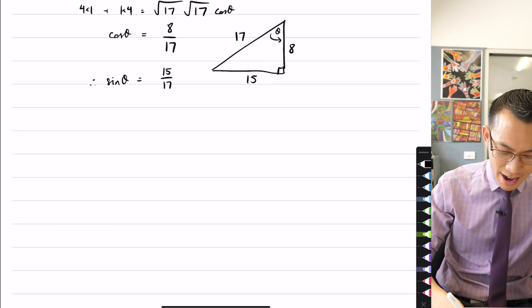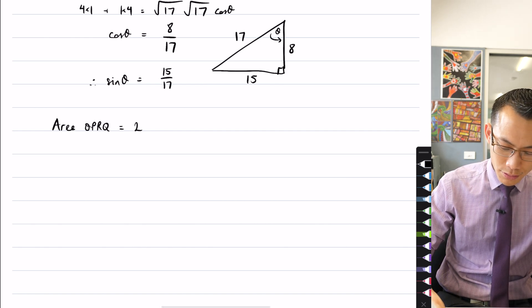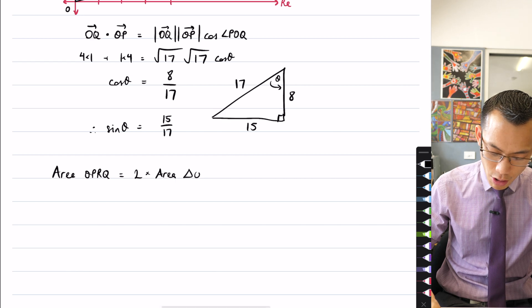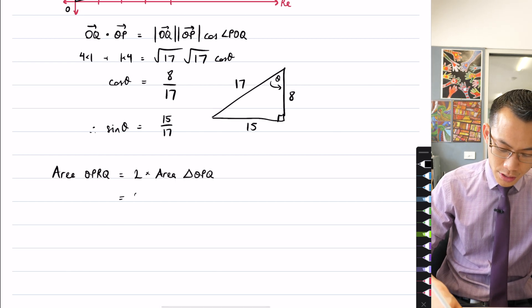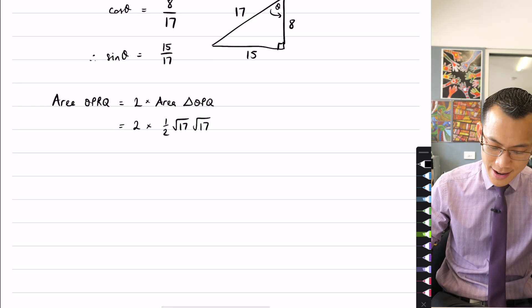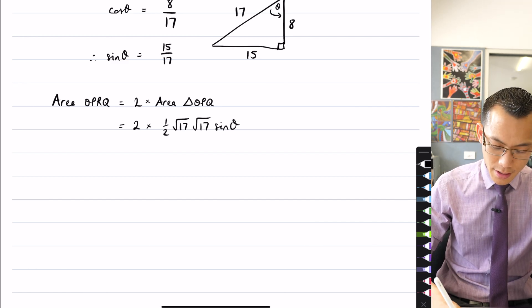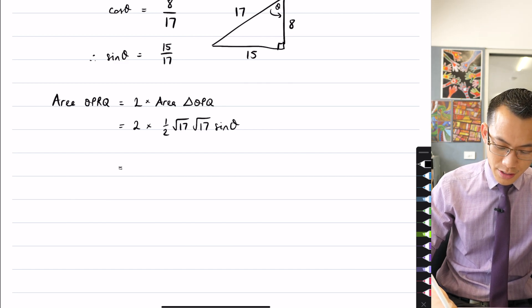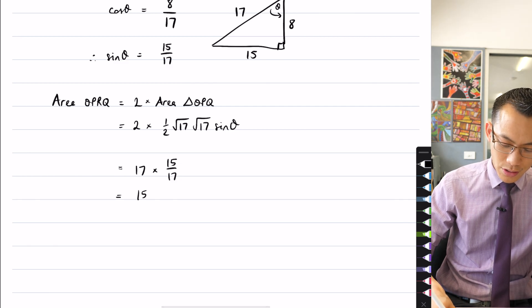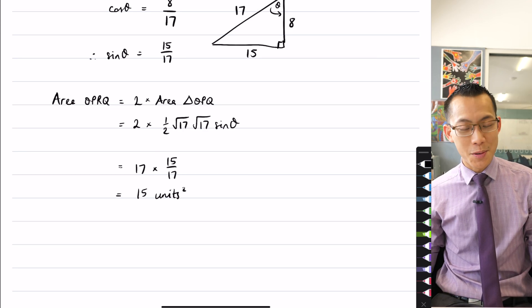I'm going to say that area OPRQ, it's double the area of this blue triangle that I've just worked out here, which is OPQ. So let's call that triangle OPQ, which is two times, here comes just the area formula, it's two times a half AB sine C, which in this case is sine theta. I already know what that is, so I'm getting the two times a half, they're just going to cancel. I'm going to get 17 times 15 on 17, which is the 15 square units that I was looking for in the first place.